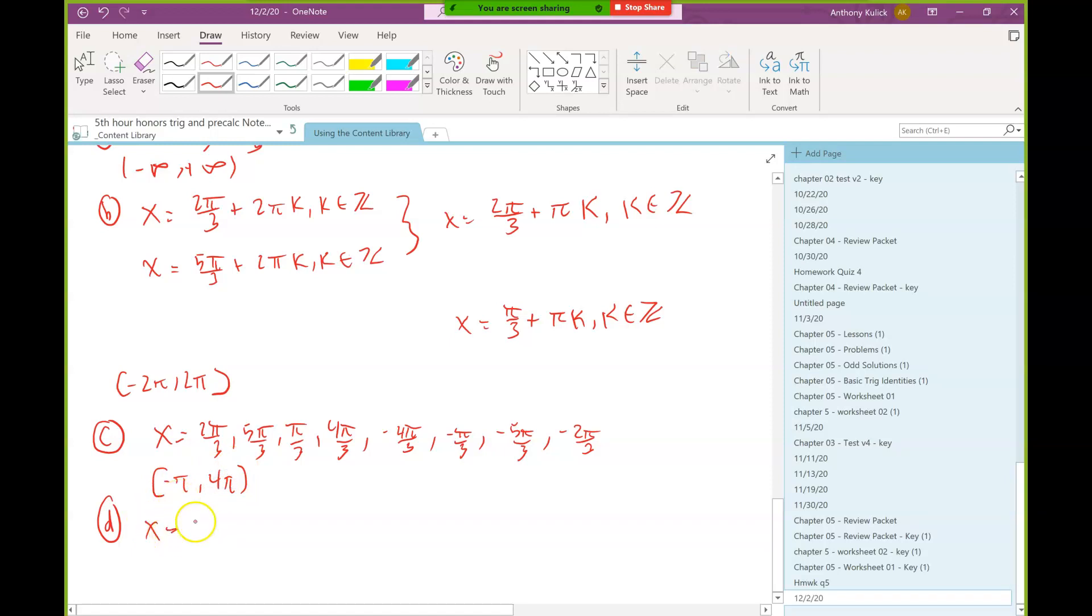All of our answers from part A are still going to be answers in part C, so we can recopy those. And since all of these answers are positive, if we go to the next coterminal answer after these, we'll have to add 2 pi, so they're all going to be too big. So I don't have to worry about anything bigger than these, but I do have to worry about the stuff smaller. So if I subtract 2 pi from each of these, I should also encounter an answer. So 2 pi is 6 pi over 3 if I make a common denominator. So when I subtract it from 2 pi I get negative 4 pi over 3. When I subtract it from 5 pi over 3 I get negative pi over 3.